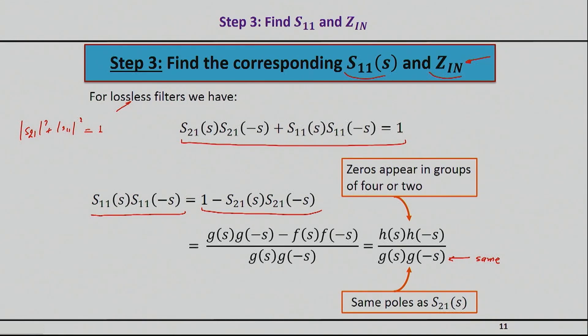The zeros will be different, but they will appear again in groups of four or two, and that's something again very similar to what happened for my S21.